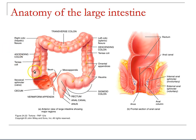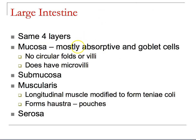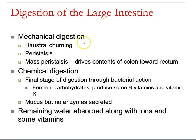In the large intestine — ascending, transverse, descending, sigmoid colon, rectum, and anus — there are four layers; the mucosa is mostly absorptive and goblet cells with no circular folds. All we're doing now is packing materials together and preparing them for movement into the rectum and out of the body. The haustra and longitudinal muscles push materials along. There is mechanical digestion occurring here, driven by bacteria.